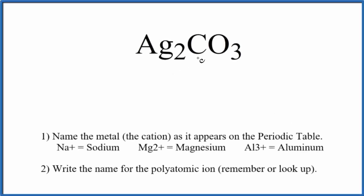To write the name for Ag2CO3, the first thing we need to recognize is this CO3 here. This is a polyatomic ion. It's called the carbonate ion.